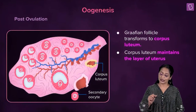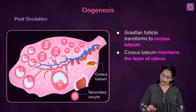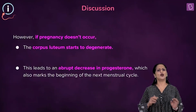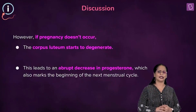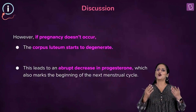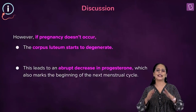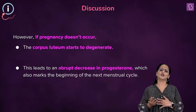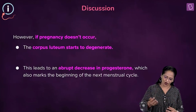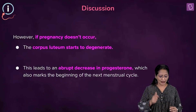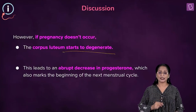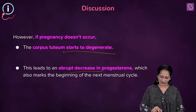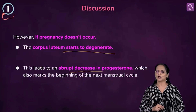The Graafian follicle gets converted and transformed into the corpus luteum, which helps in maintaining the endometrium of the uterus. Suppose pregnancy does not take place — the corpus luteum starts to degenerate. It gets converted into a white structure called corpus albicans. When corpus luteum starts to degenerate, there is going to be an abrupt, sudden drop in the level of progesterone.